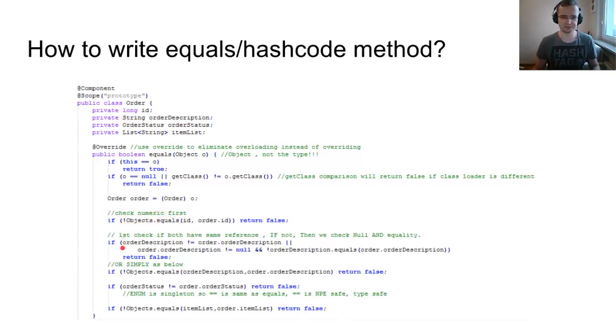Then we check the order description here, or we can use simply the Objects.equals method for the strings, for the order description to compare. For the enumeration, order status, we can use this comparator operator because it's the same and it's null pointer safe. And for the list at the end, we use the object equals.